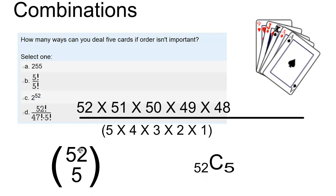There's a second way this gets expressed. This is called 52 choose 5. So 52 objects choose 5 of them, and it's equivalent to this.